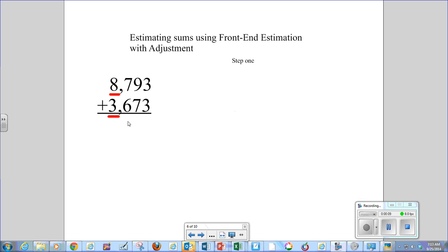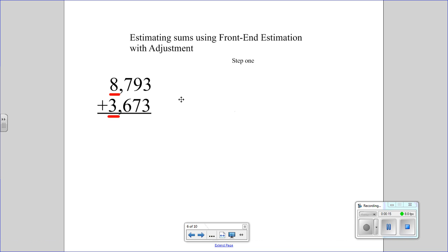So we have this problem here. We have 8,793 plus 3,673. And with Front End Estimation with Adjustment, you do, like we did with Front End Estimation, is you just do a Front End Estimation. There's no rounding. So we've got 11,000 so far.